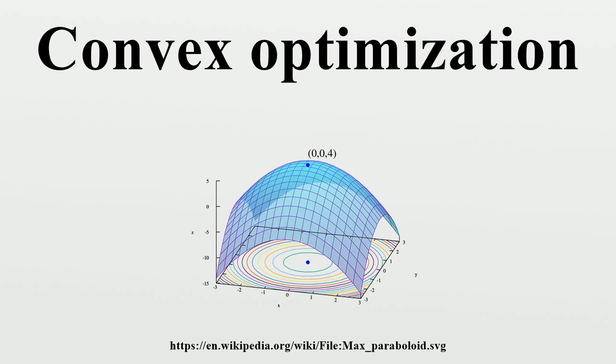The Hahn-Banach theorem and the existence of subgradients lead to a particularly satisfying theory of necessary and sufficient conditions for optimality, a duality theory generalizing that for linear programming and effective computational methods.